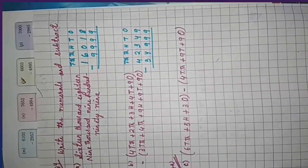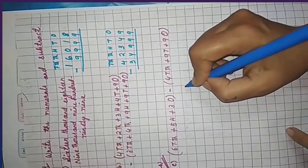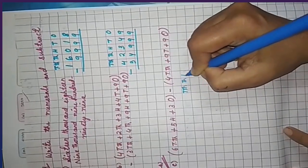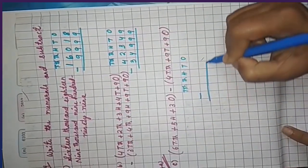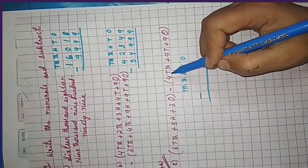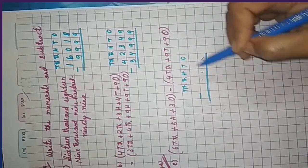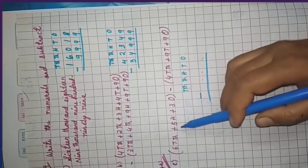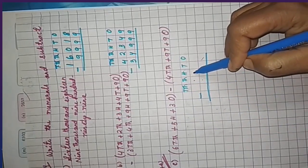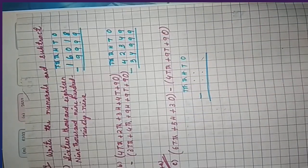Write the place value columns: ten thousands, thousands, hundreds, tens, ones. Arrange both numbers in proper places, put the subtraction sign, and subtract. Whenever a place value is missing — for example, four ten-thousands with no thousands or hundreds — write zero in those places. Similarly, six ten-thousands with no thousands, write zero there; no tens, write zero. Wherever no place value number is given, write zero.